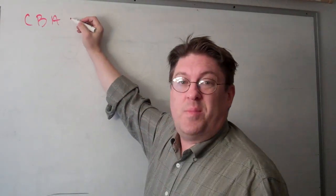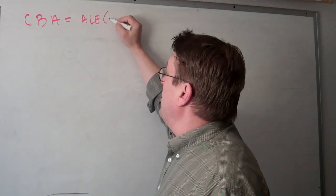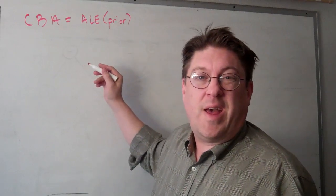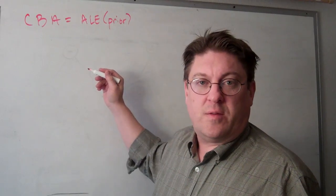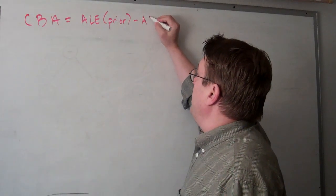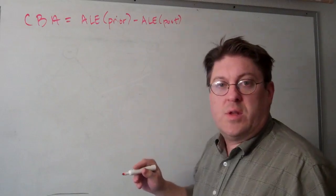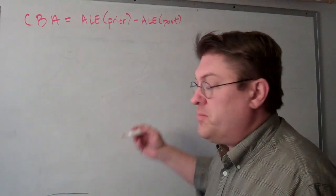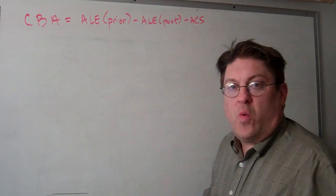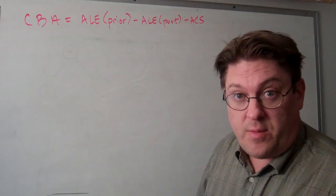CBA, which is the net benefit, equals the ALE prior to implementing safeguards—ALE is the annualized loss expectancy, the amount you lose—minus ALE post, which is the amount you lose after you've implemented the safeguard, minus ACS, which is the annualized cost of the safeguard.